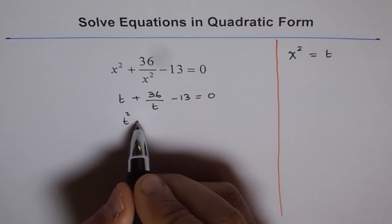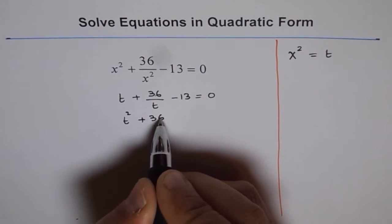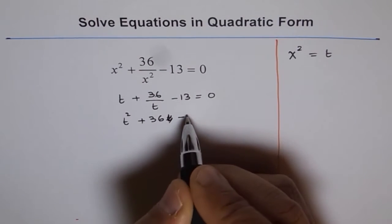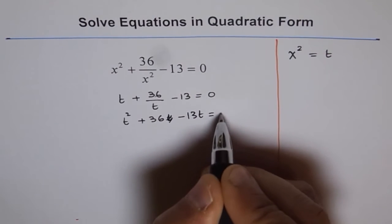So, it becomes t squared plus 36t minus—not t because t gets cancelled—minus 13t equals 0.